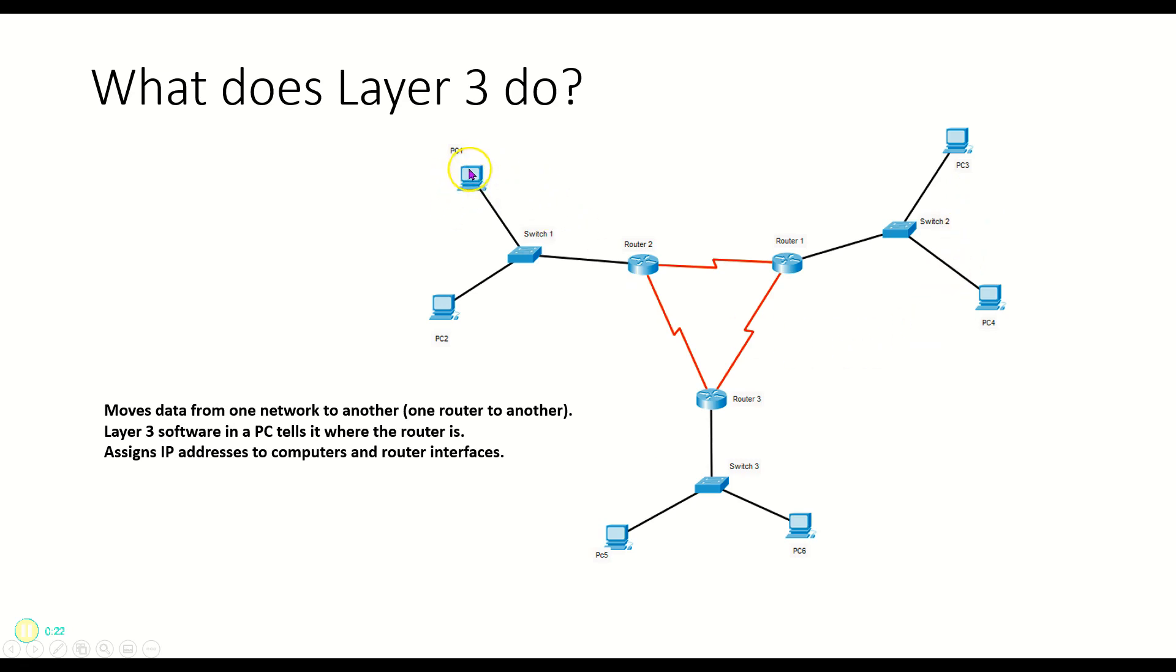In the computer is some Layer 3 software that tells it things like IP addresses, where the router is, and so on. So all these IP addresses are something that we deal with at Layer 3. And that's it. We're going to talk about the devices in the next video.